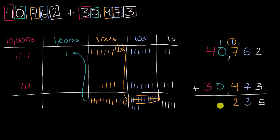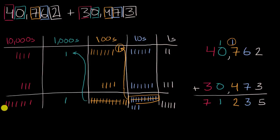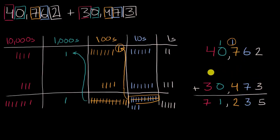And then finally in the ten-thousands place, four ten-thousands plus three ten-thousands is seven ten-thousands. So this number is seventy-one thousand, two hundred and thirty-five. Hopefully it all makes sense how these two things fit together — what's going on here. You're not just magically carrying numbers or magically regrouping. You're just representing the same number in different ways.